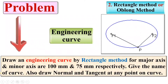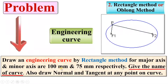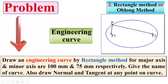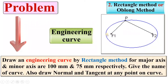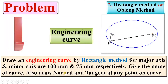Also give the name of the curve. By default, if the major axis and minor axis are given, then you will get an ellipse. Here, this is the major axis and this one is the minor axis, and at last we are going to draw the normal and tangent also.